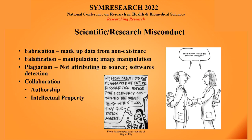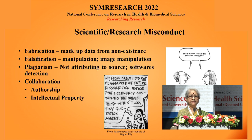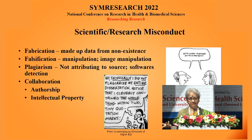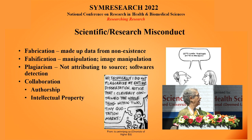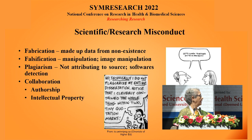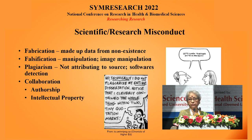Misconduct is divided into FFP: fabrication, falsification, and plagiarism. Fabrication is like weaving threads — there was nothing, you just cooked it up. Falsification is when you have some data but modify it to suit your purpose. Plagiarism is cut-and-paste content for which you do not attribute the source. When it comes to collaboration, there are issues about authorship and intellectual property — who will own it. You have to decide about this a priori before establishing collaborative MOUs and agreements.